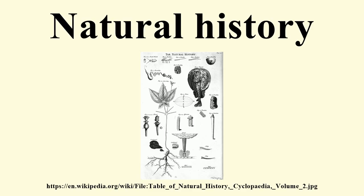Definitions from biologists often focus on the scientific study of individual organisms in their environment. As seen in this definition by Marston Bates: "Natural history is the study of animals and plants, of organisms. I like to think of natural history as the study of life at the level of the individual, of what plants and animals do, how they react to each other and their environment, how they are organized into larger groupings like populations and communities." And this more recent definition by D.S. Wilcov and T. Eisner: "The close observation of organisms, their origins, their evolution, their behavior, and their relationships with other species."